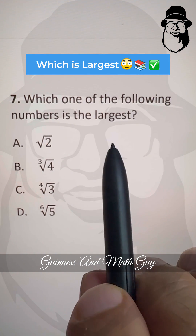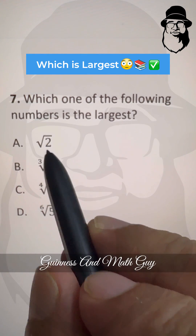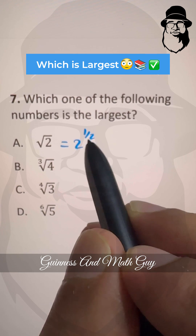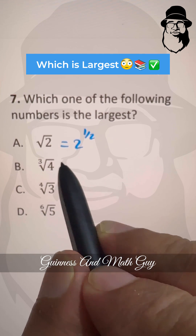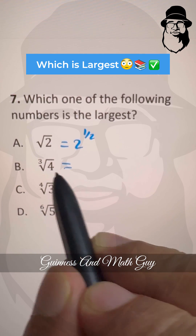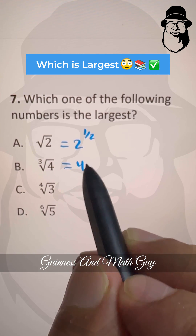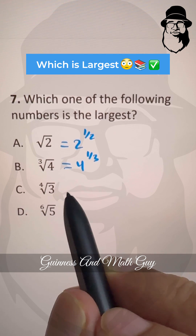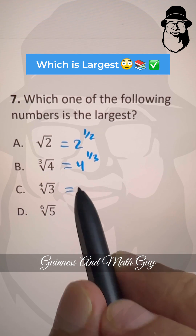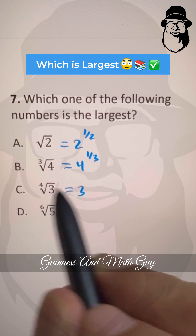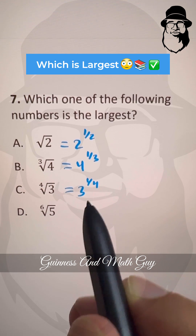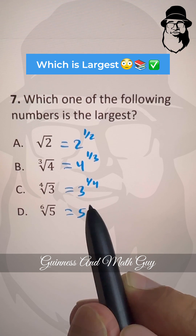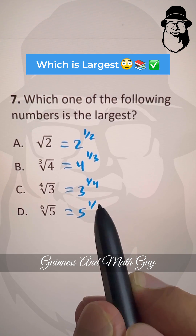Which of the following numbers is the largest? Square root of 2 we can write as 2 to the power 1 over 2. Cube root of 4 we can write as 4 to the power 1 over 3. 3 we can write as 3 to the power 1 over 4, since it's the 4th root. And 5 with the 6th root means 1 over 6.